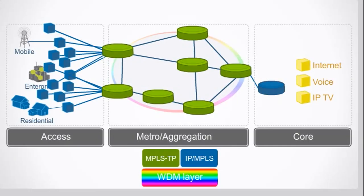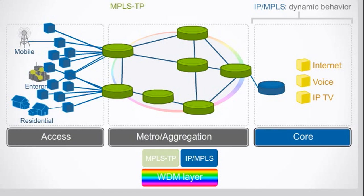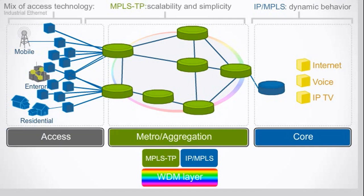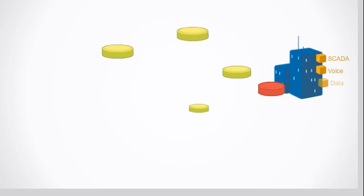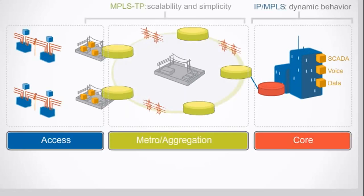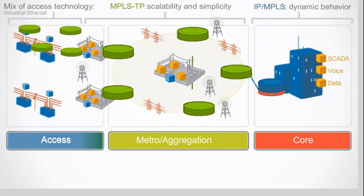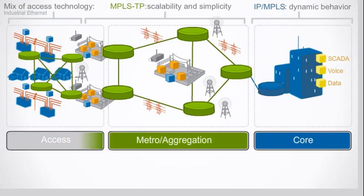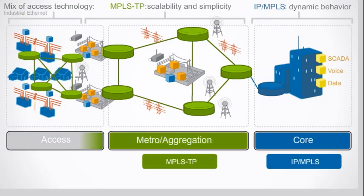This new network topology offers a combination of IP MPLS in the core, where dynamic behavior is important, and an MPLS-TP aggregation network towards the access, where scalability and simplicity are important. This new standard lets you replace your aging SDH/SONET infrastructure with an MPLS infrastructure, reduce complexity at the same time, and operate it the same way as your current infrastructure.